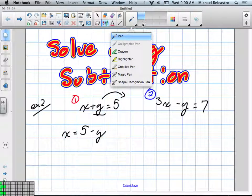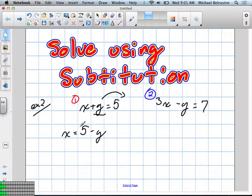But now that I've done that, what's important is we have a value for x. We know that x is also the equivalent, or I can replace x with 5 minus y.